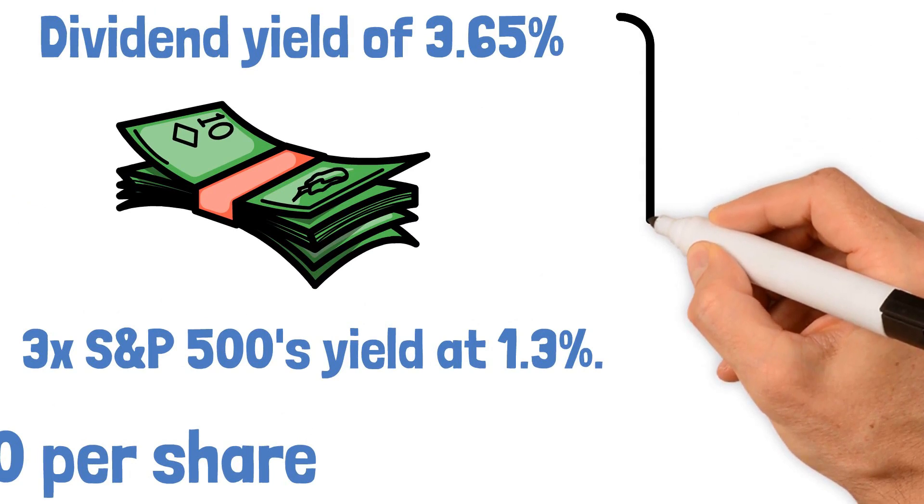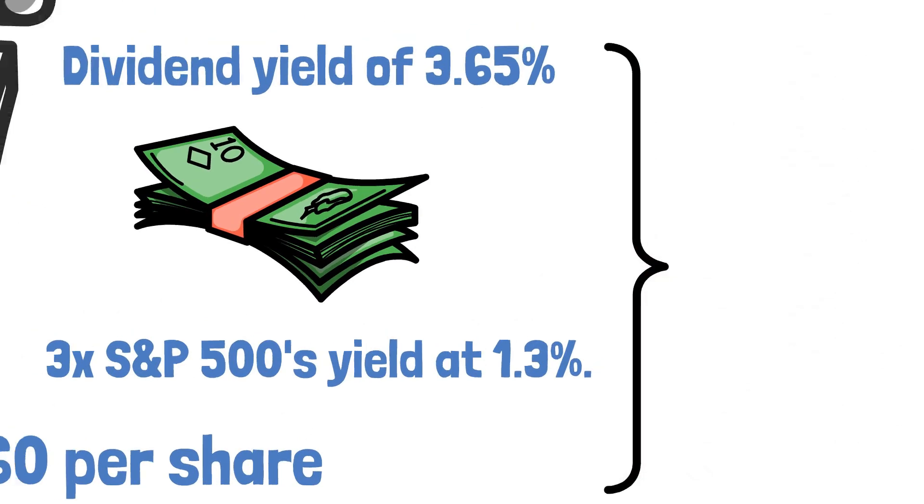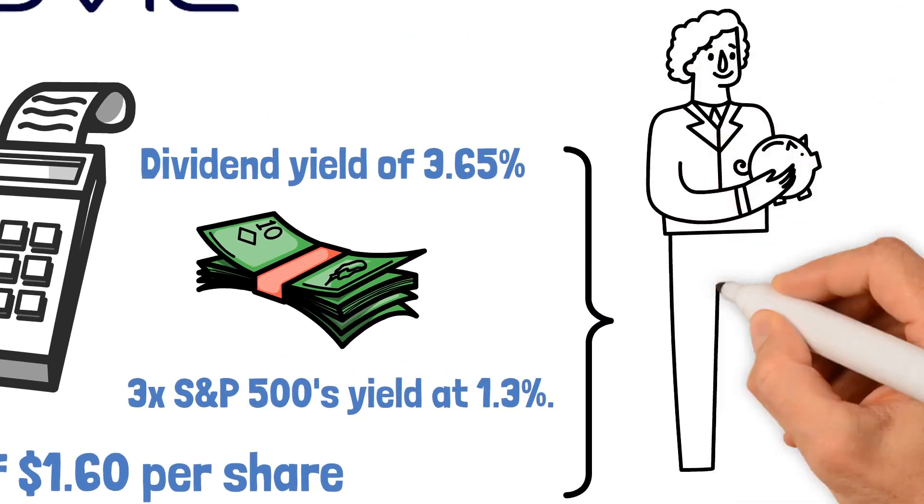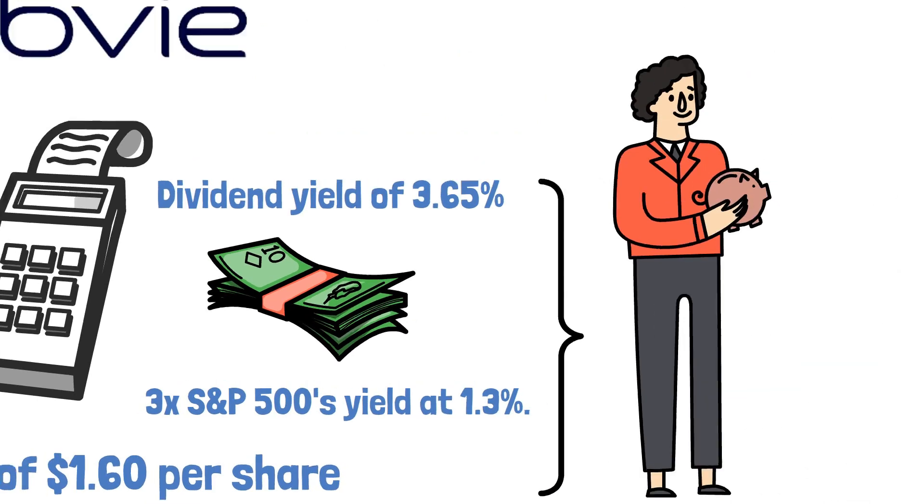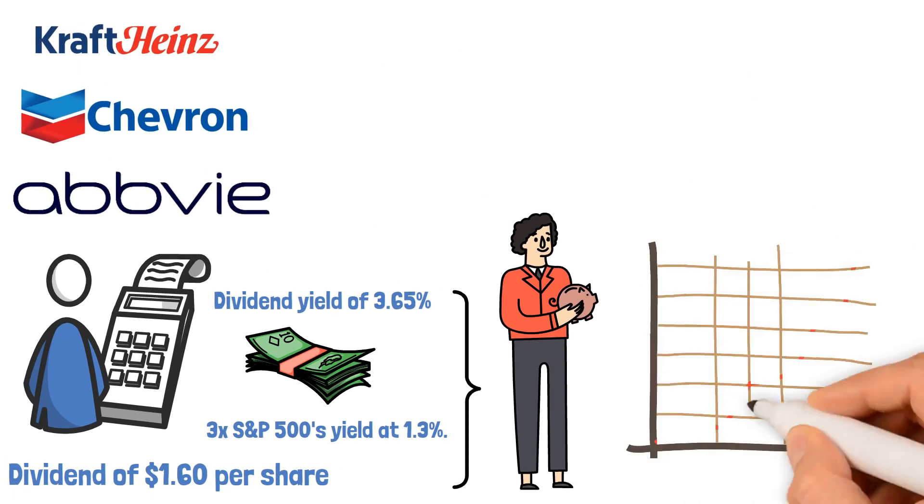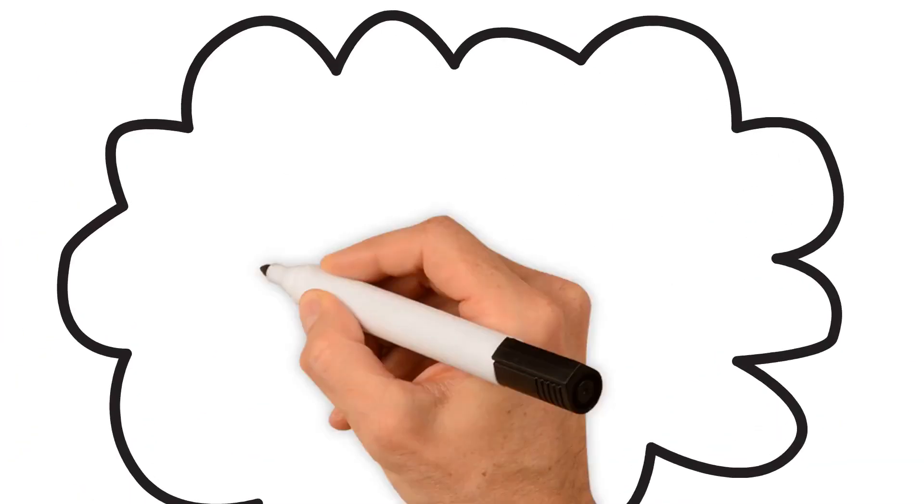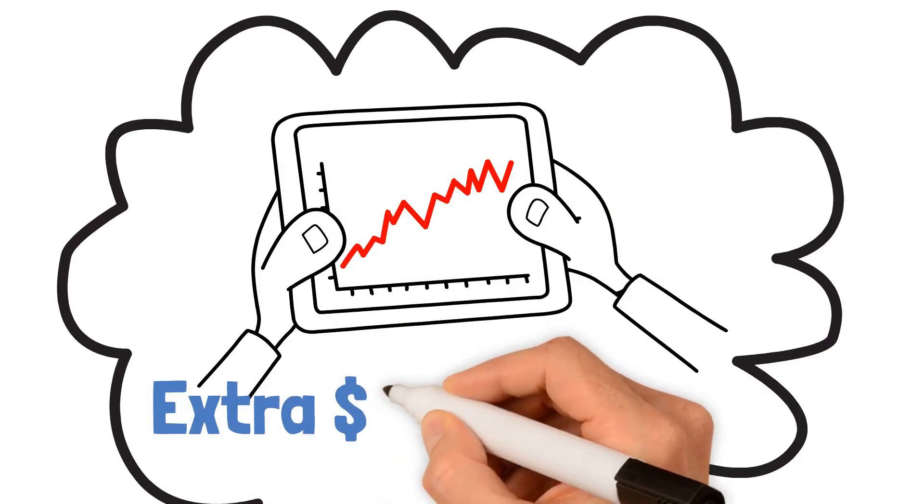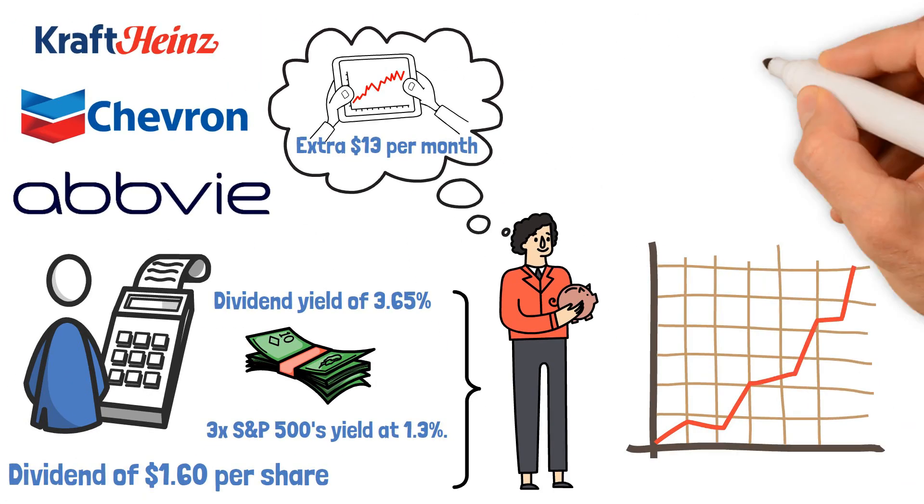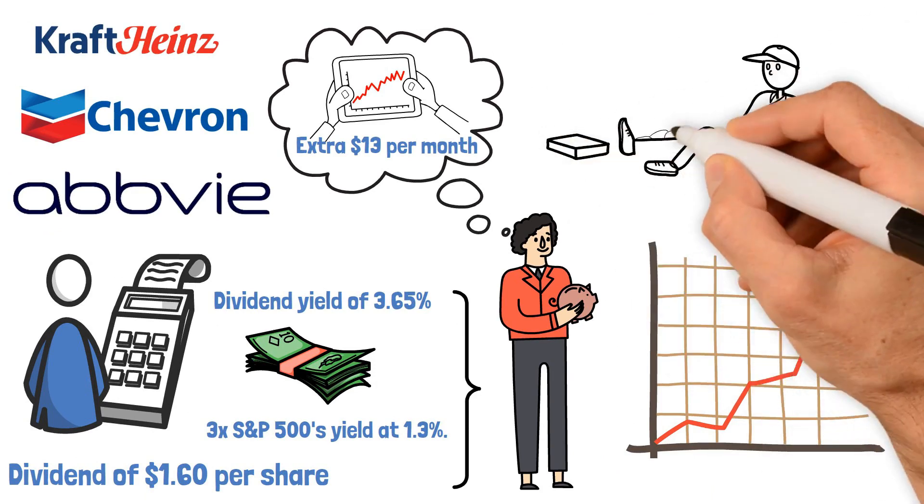The significance of this dividend yield becomes evident when considering the positive impact on investors' finances, especially during periods of inflation. Owning 100 shares translates to an extra $13 per month, providing additional financial stability when needed the most.